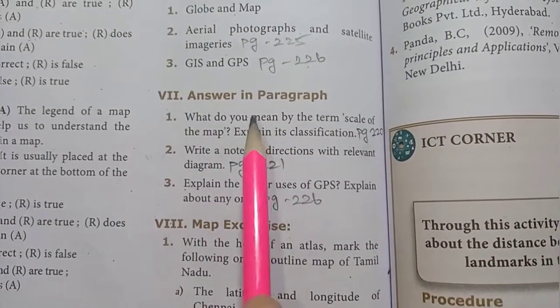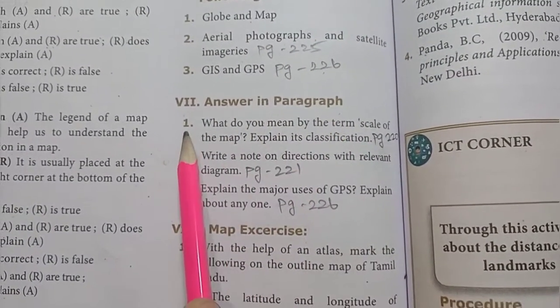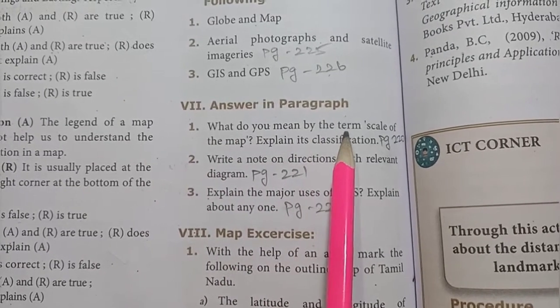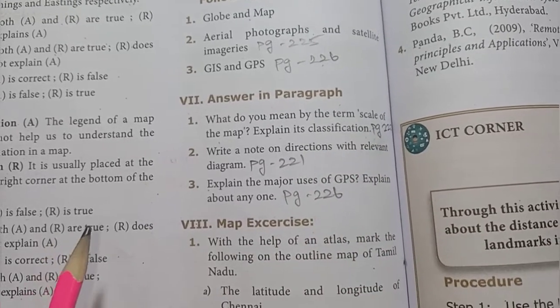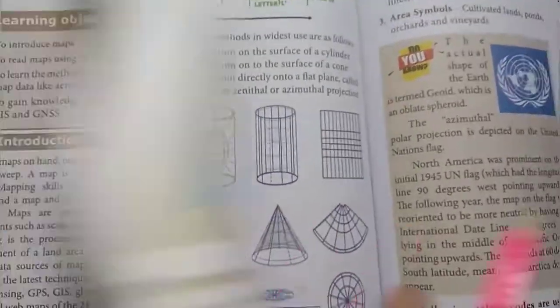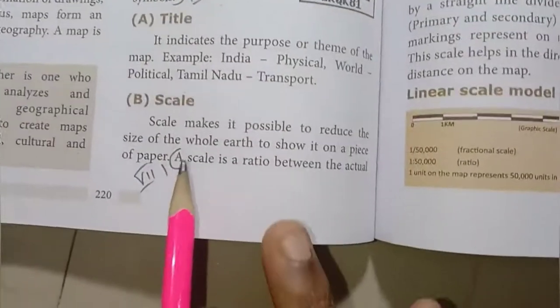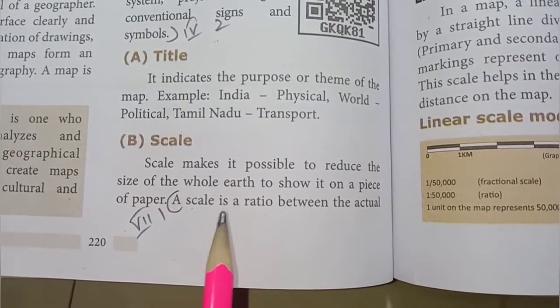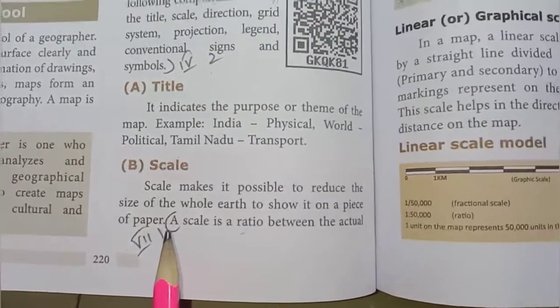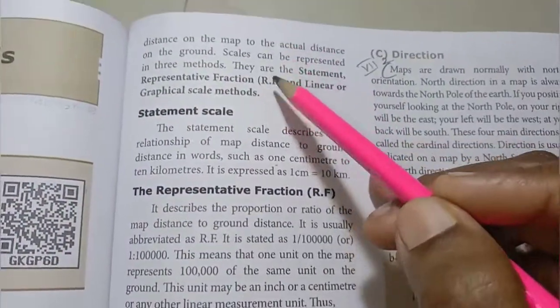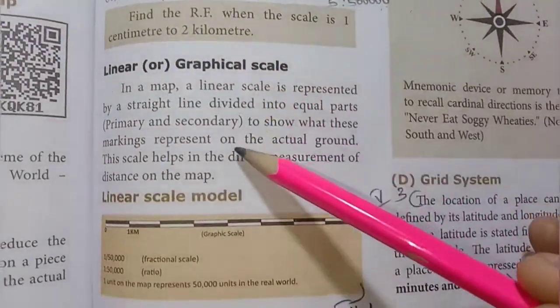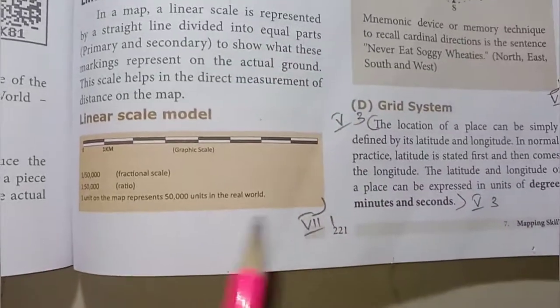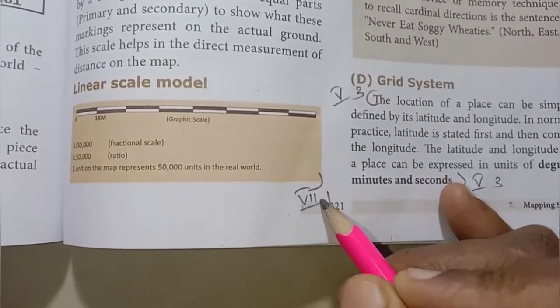Then Roman numeral seven, answer in paragraph. First one, what do you mean by the term scale of the map? Explain its classification. Page number 220. Scale of a map, in the scale paragraph, scale is the ratio. Seventh Roman numeral, first one answer. The right side, full statement. Scale, representative fraction, then linear or graphical scale. Seventh Roman numeral, first one answer.